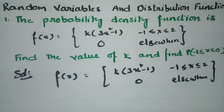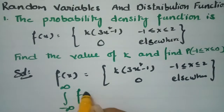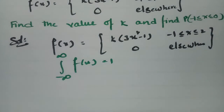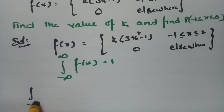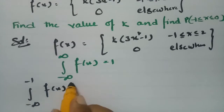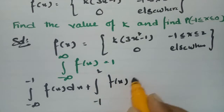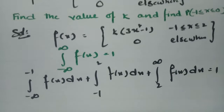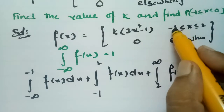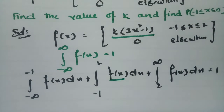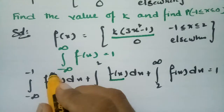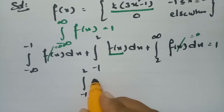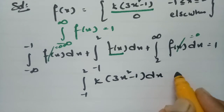We know that the total probability is always equal to 1. So integrating from -∞ to +∞, we insert the breakpoints -1 and 2. This gives: integral from -∞ to -1 of f(x)dx + integral from -1 to 2 of f(x)dx + integral from 2 to +∞ of f(x)dx = 1. Since f(x) = 0 outside [-1, 2], the first and last integrals are 0, leaving integral from -1 to 2 of k(3x² - 1)dx = 1.